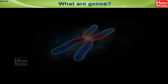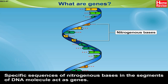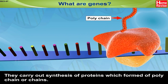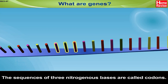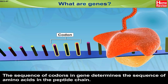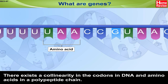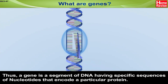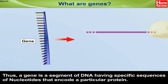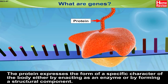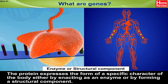What are genes? Specific sequences of nitrogenous bases in the segments of a DNA molecule act as genes. They carry out synthesis of proteins which form a polypeptide chain or chains. The sequences of three nitrogenous bases are called codons. The sequence of codons in a gene determines the sequence of amino acids in the peptide chain. There exists a co-linearity in the codons in DNA and amino acids in a polypeptide chain. Thus, a gene is a segment of DNA having specific sequences of nucleotides that encode a particular protein. The protein expresses the form of a specific character of the body either by acting as an enzyme or by forming a structural component.